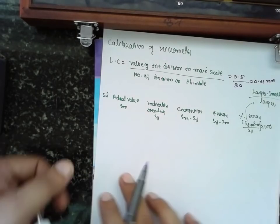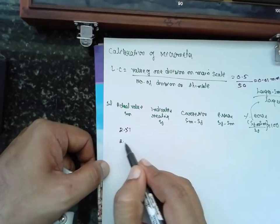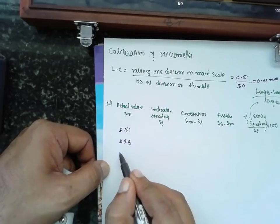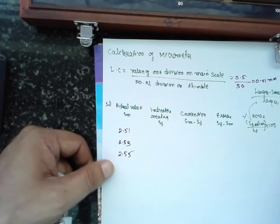Now actual reading. I will take the readings here: 2.51, 2.52, 2.53, 2.55. Three readings are enough. This is the actual reading.